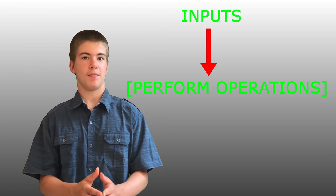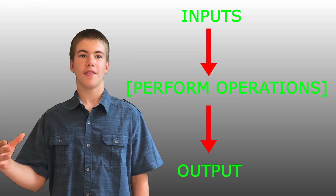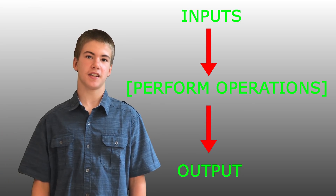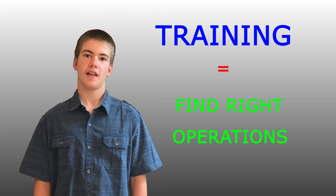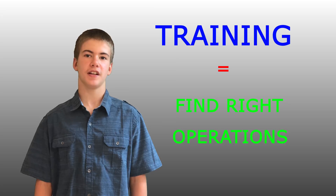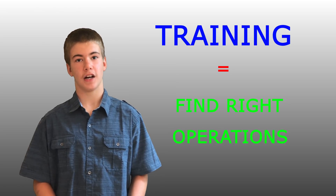The basic idea of a neural network is that you can take some input data — usually many inputs — and perform some operations on them. Based on this, you can get an output, a number, that can mean many things based on the context. Of course, you first need to find the right operations in a process called training. The aim of this video is not to explain how this works, so I will leave it at that for now.